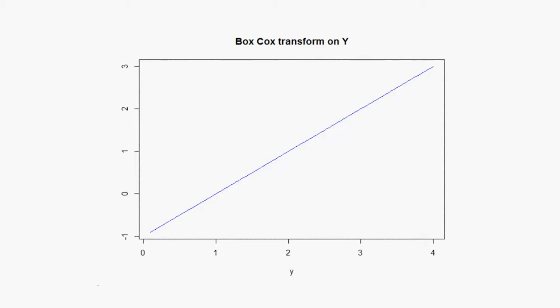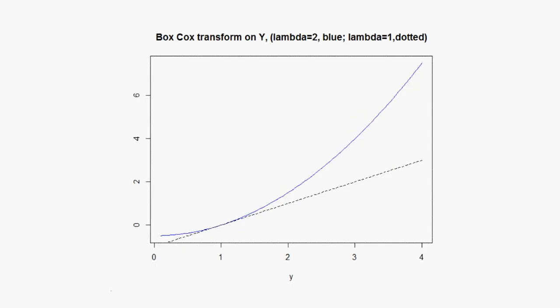That's the story for transformation when lambda is one. The shape of the distribution does not change. So this is a sensible benchmark. Let's add on the curve for when lambda is greater than one. Let's say two.